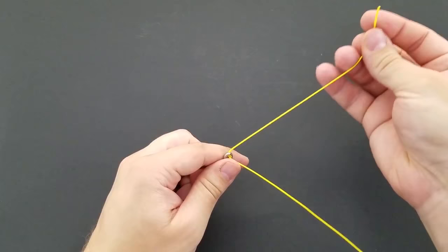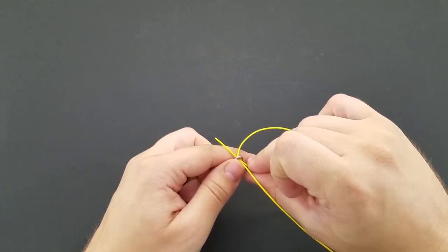Now with your tag end, you're going to actually place that right back through the eye of the hook in the same direction, just like so.